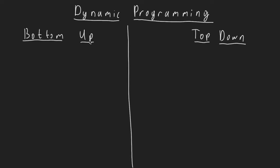We are going to solve this problem using dynamic programming — mainly the bottom-up approach and the top-down approach. Any problem we can solve with the bottom-up approach, we can also solve with the top-down approach. Let's start with the easiest one — the bottom-up approach. Let's say we have this example: 1, 15, 7, and 9, and k equals 3.